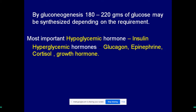Insulin is produced in response to increased blood glucose concentration, meaning hyperglycemia. In response to hyperglycemia, insulin is produced in the body. It clears glucose from the blood by increasing glycolysis and the citric acid cycle pathways, so glucose is oxidized and the concentration of glucose in the blood decreases. That is why it is called a hypoglycemic hormone.